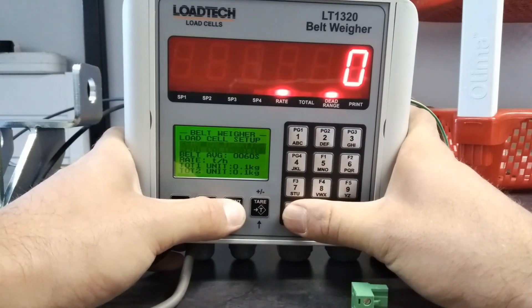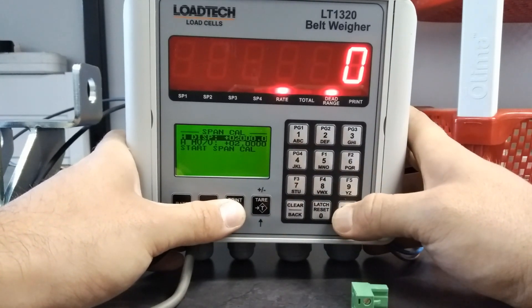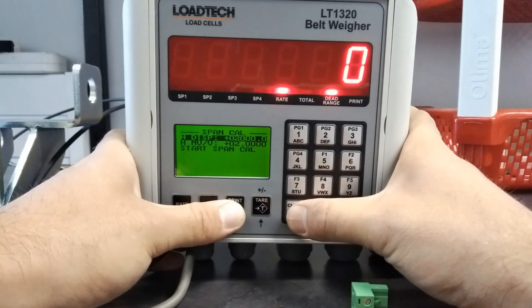Next go to span calibration. Set your high display, which is going to be the combined weight of your load cells. Set your high millivolt per volt. If you don't have the high or low millivolt per volt, that's fine. You can select start zero calibration or start span calibration and it will set it for you.